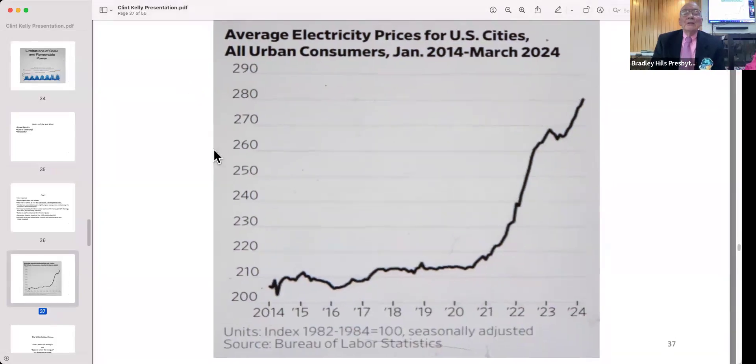This was in the Wall Street Journal a couple weeks ago. It shows average price of electricity, and you note that as we have gone heavily into renewables, the price has gone up. There are lots of reasons why prices fluctuate, but I found this to be a very compelling chart and a good article with it.